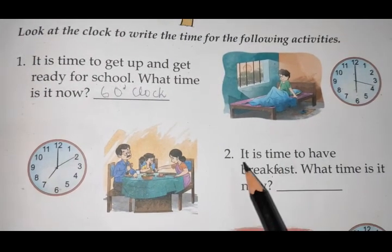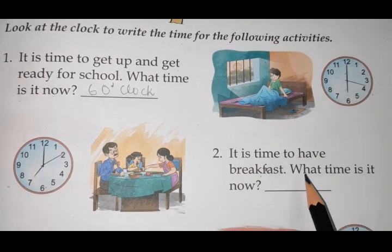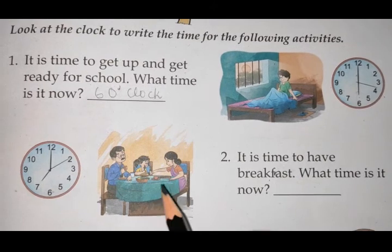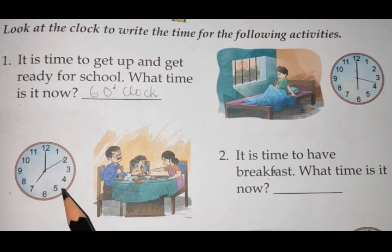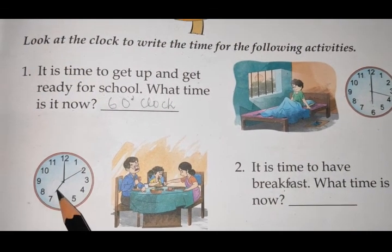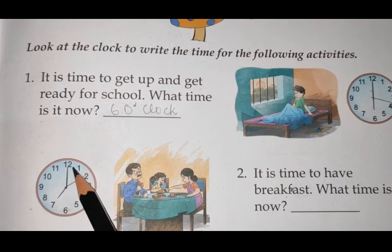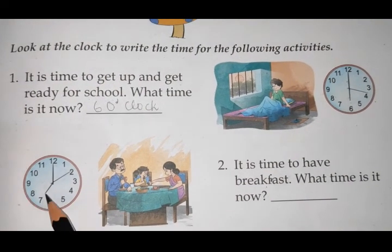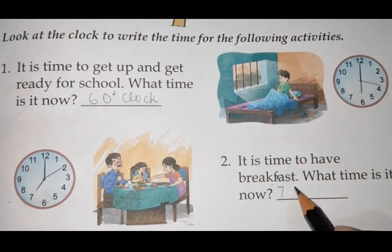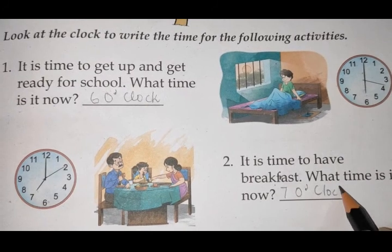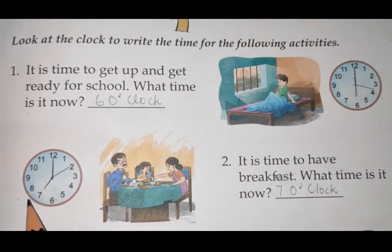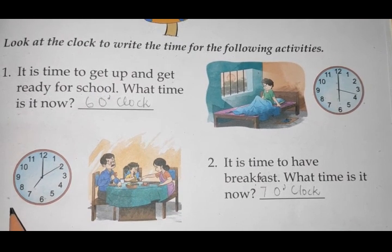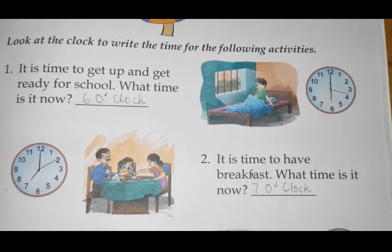Let us read the second one. It is time to have breakfast. What time is it? Here you can see that the family is having breakfast at the dining table. Let us look at the clock for the timing. The hour hand is at 7 and the minute hand is at 12, so this clock is showing the time 7 o'clock. You will be writing the time 7 o'clock. This is the time when you should have breakfast and head off to school.